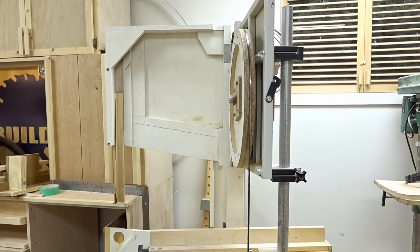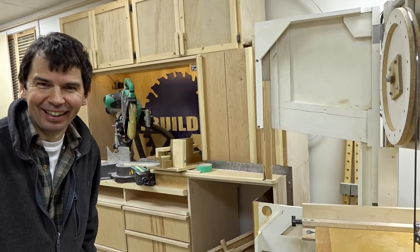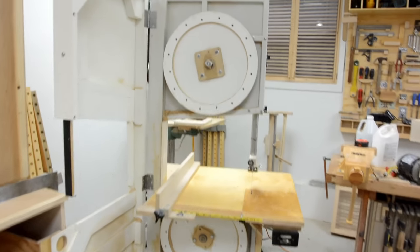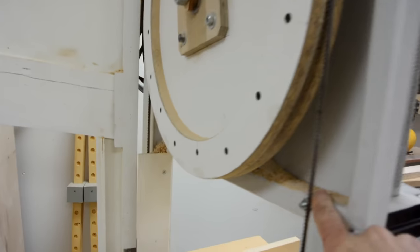This is John Heist's homemade bandsaw, which he made with a steel frame instead of a wooden frame. So this is all steel parts here and there.